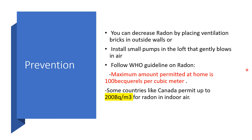Geologists should watch out. For prevention, you can decrease radon by placing ventilation bricks in outside walls, or install small fans in the loft that gently blow air around. You can follow WHO guidelines on radon: the maximum amount permitted at home is 100 Bq per cubic meter. Some countries, like Canada, are more lenient and permit up to 200 Bq per cubic meter for radon in indoor air.